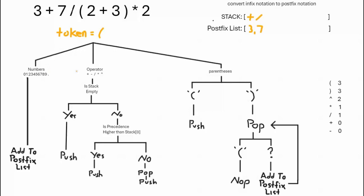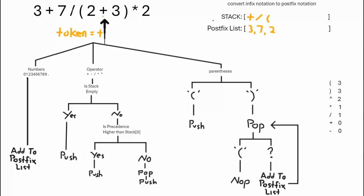Now we're on the open parentheses. Assign it to token — it's not a number, not an operator, it's a parenthesis. For an open parenthesis, just push it to the stack. Once inside an open parenthesis, imagine this is a new stack — the program is starting over. Token equals two — it's a number, add it to the postfix list. Next element is the plus symbol. It's an operator. Since the last stack item is an open parenthesis, we treat the stack as empty and push plus.